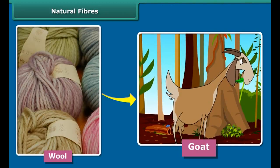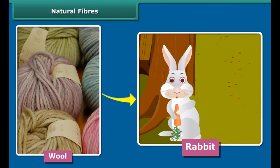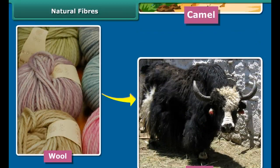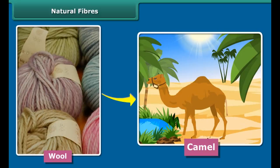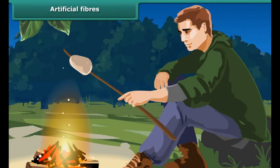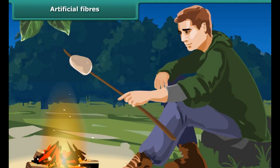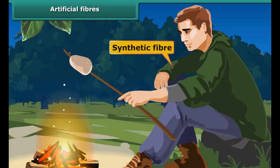Silk fiber is drawn from the cocoon of a silkworm. Wool is obtained from the hair of animals like sheep, goat, rabbit, yak, and camel.